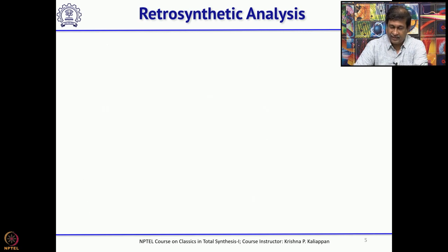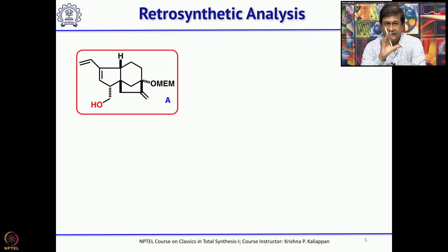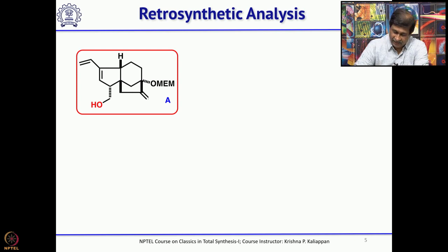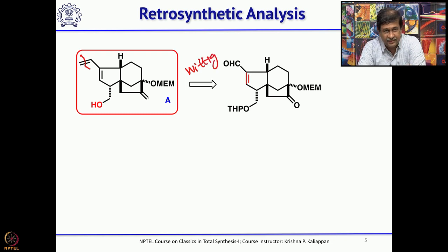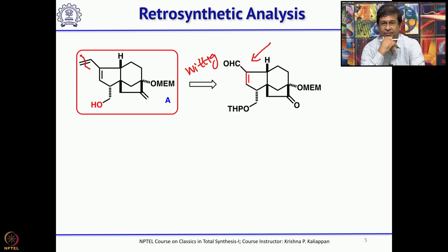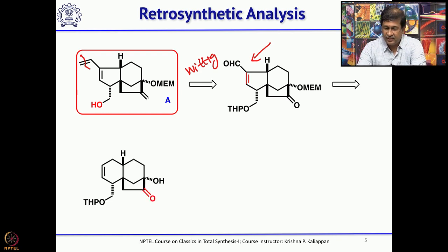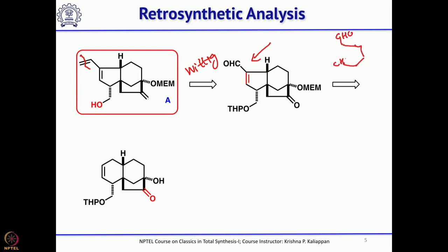This can be obtained from the corresponding alcohol. The key intermediate in the synthesis of gibberellic acid proposed by Corey can be made from a precursor with a double bond using a Wittig reaction — by methylene Wittig it should be possible to homologate the aldehyde to the vinyl group. Wherever you see an alpha-beta unsaturated aldehyde, an aldol reaction should come to mind. So, if you have a 1,5-dialdehyde, it can undergo an aldol followed by dehydration to give the alpha-beta unsaturated aldehyde.